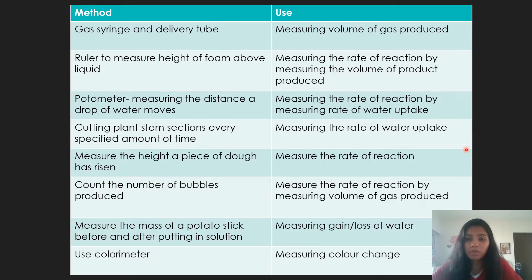So in the specimen paper, you had the method given was to measure the height of foam. But in the mark scheme, you could also use a gas syringe and delivery tube, or you could count the number of bubbles produced. For the breakdown of hydrogen peroxide, you produce oxygen.